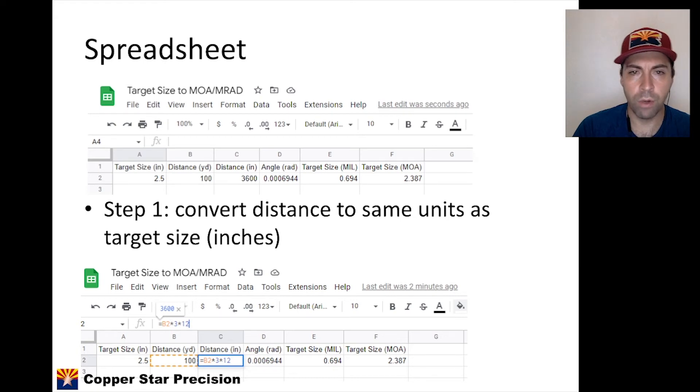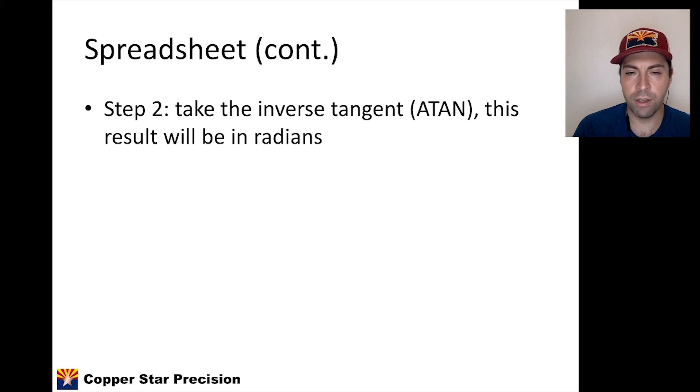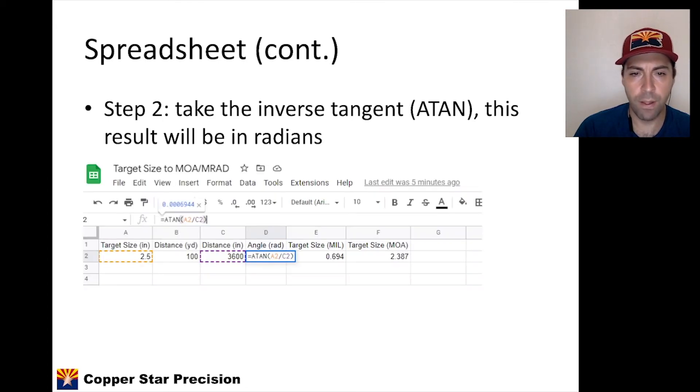In column D, we're going to take the inverse tangent, and the function in Excel and Google Sheets is called ATAN, which is the subscript for the inverse tangent function. And this result will be in radians by default. So we take, as you can see in the cell D2, we have equals ATAN, which is the inverse tangent function. And remember, it's the opposite side over the adjacent side. So it's the target size over the distance. We have the inverse tangent of cell A2, which is the target size, divided by cell C2, which is the distance in inches. Remember, those two units have to be the same. This spits out 0.0006944 radians is the angle that that triangle makes.